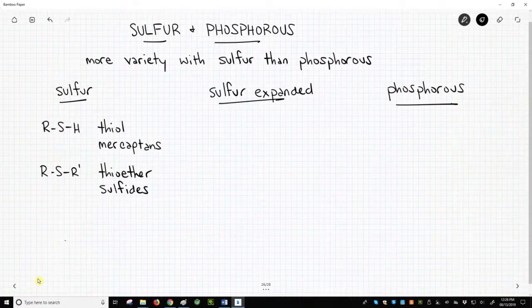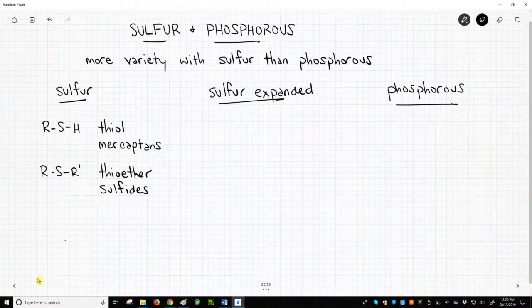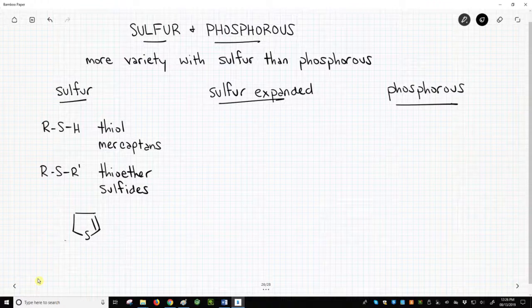Sulfur is often seen in five-membered aromatic rings in drug-like molecules.